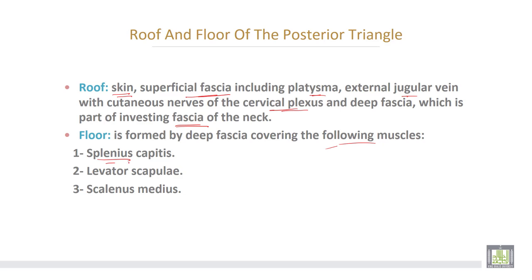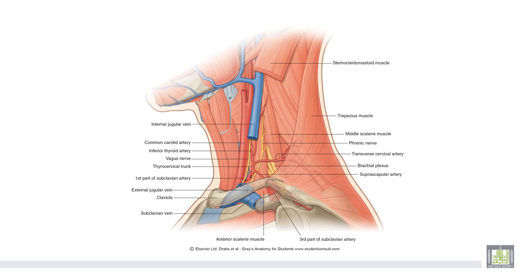The floor muscles are splenius capitis, levator scapulae muscle, and scalenus medius — remembered as SLS. This is the floor of the posterior triangle: splenius capitis muscle, levator scapulae muscle, and scalenus medius muscle.